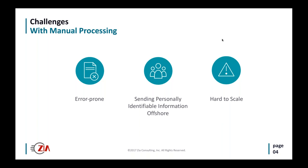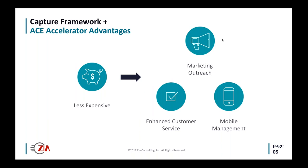The biggest problem with manual processing, along with errors and quality issues, is that it's difficult to scale. Everyone here is looking to grow their business. Ramping up people is difficult, and ramping down is even harder. In mortgage processing, everything is dictated by rates, time of year, and time of month — so scalability needs to be there.